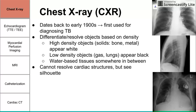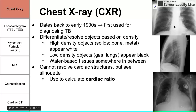One downside to chest x-ray is that you cannot resolve cardiac structures, but you do see a silhouette of the heart. If you know the general positioning and anatomy of the heart, you can still deduce certain things from this silhouette and calculate cardiac ratio. Cardiac ratio is the horizontal distance the heart takes up divided by the horizontal distance of the entire chest cavity. In the top left image we see a normal-sized heart, while the bottom image shows a heart with a cardiac ratio larger than 50% — an example of cardiomegaly, an enlargement of the heart.